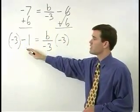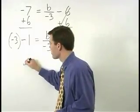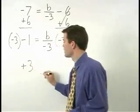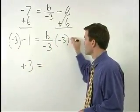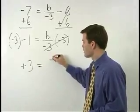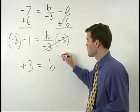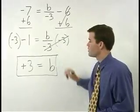On the left, negative 3 times negative 1 is positive 3. And on the right, our negative 3's cancel, we're left with B. So positive 3 equals B.